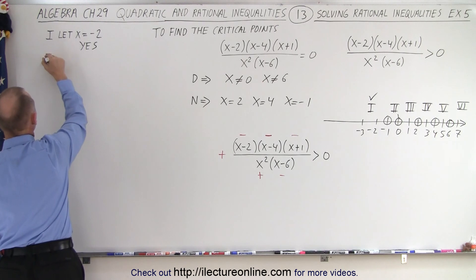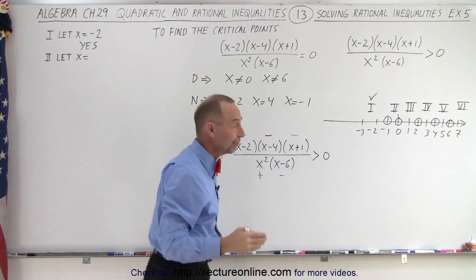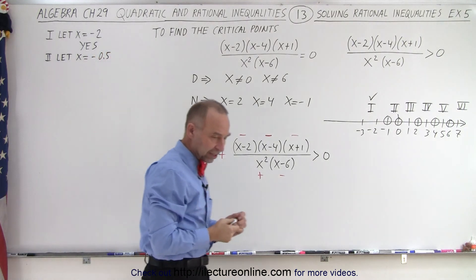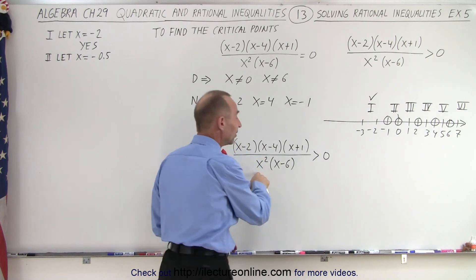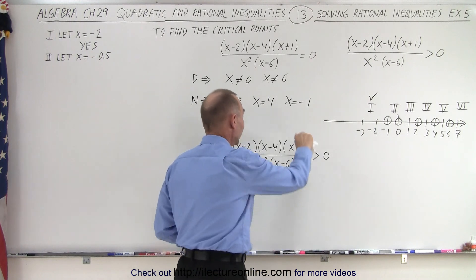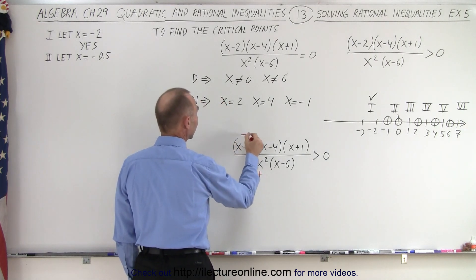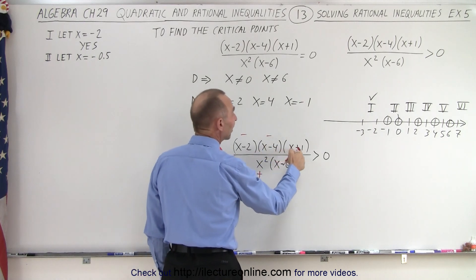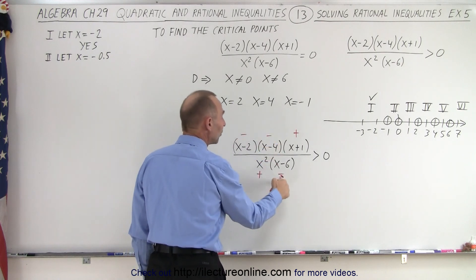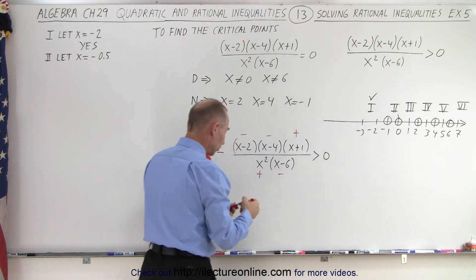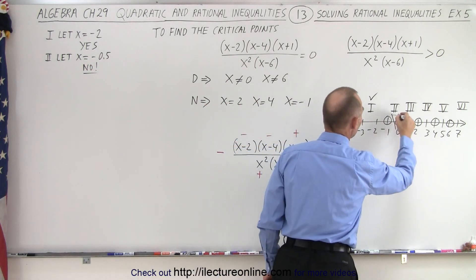For region two, we let x equal negative 0.5, a value between negative one and zero. Since x is squared in the denominator, that term is always positive regardless of the sign of x. Negative 0.5 minus two is negative. Negative 0.5 minus four is negative. Negative 0.5 plus one is positive since one is bigger than 0.5. Negative 0.5 minus six is negative. We have an odd number of negatives, making the whole fraction negative, which cannot be greater than zero. Region number two is not part of the solution.